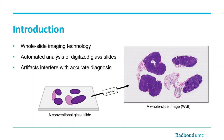Whole-slide imaging has led to several opportunities in the field of computational biology. An important example is the use of artificial intelligence for automated analysis of these histopathology images. However, artifacts may interfere with accurate diagnosis by pathologists as well as deep learning-based decision systems. As manual inspection is a time-consuming process, this calls for an automated quality control system that can propose solutions for a more accurate analysis.